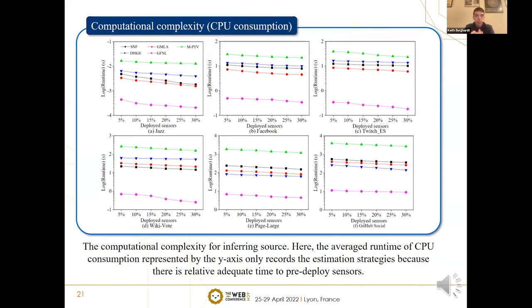This figure shows experiments to compare the runtime of different methods. Here, the average runtime of CPU consumption represented by the Y-axis only records the estimation strategies because there is relatively adequate time to pre-deploy sensors. We can get the conclusion that the CPU consumption of GFNL is approximately 10 times shorter than the optimal baseline of comparison methods.